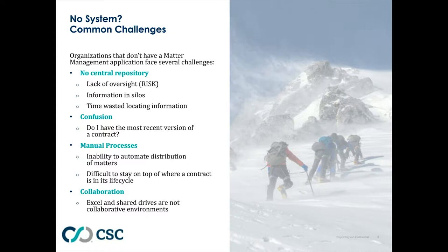The first and probably most common challenge is a lack of a central repository. With all the various types of matters across your business and all of the elements included in those matters, it's critical to have these items easily accessible and preferably all in one place. For your contracts, you need to easily identify renewal dates, parties involved, contract terms, and expiration dates. You'll also want to track other details for garnishments, real estate, and trademark matters.